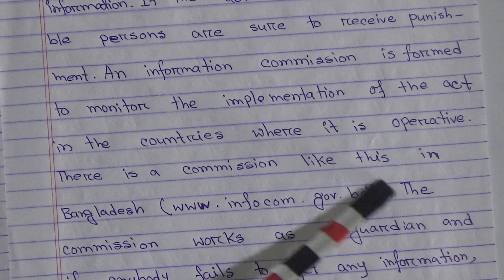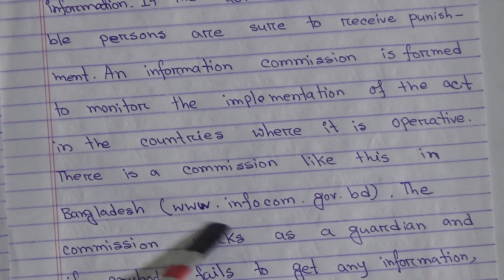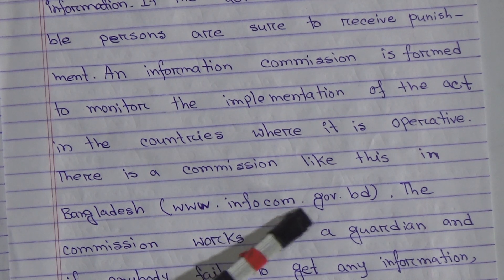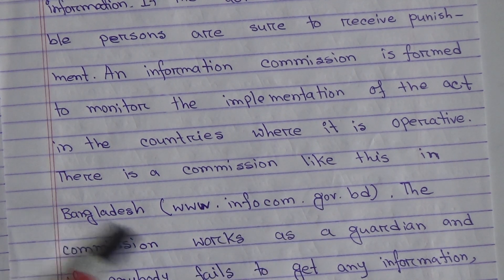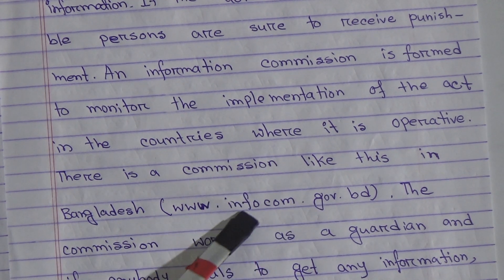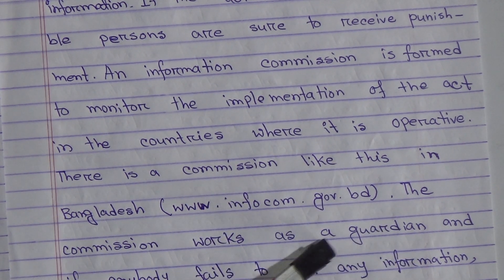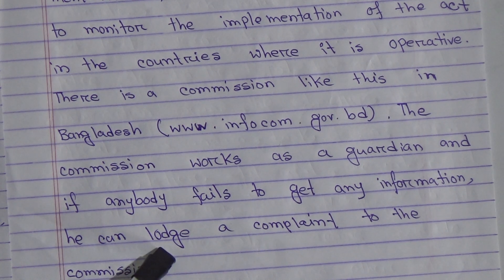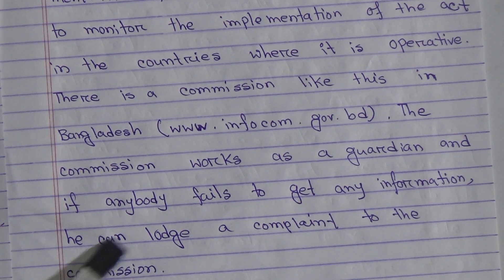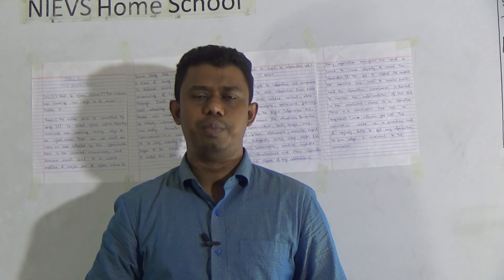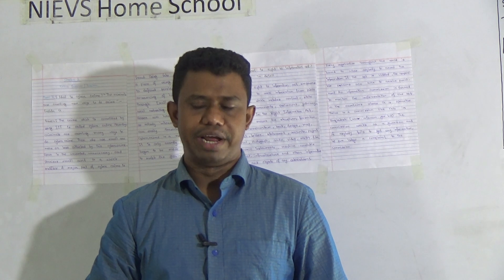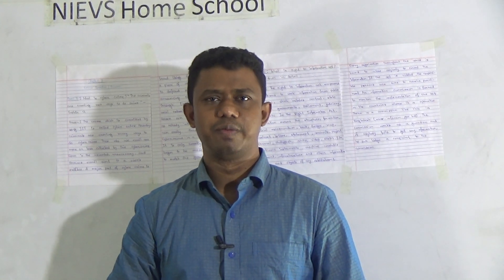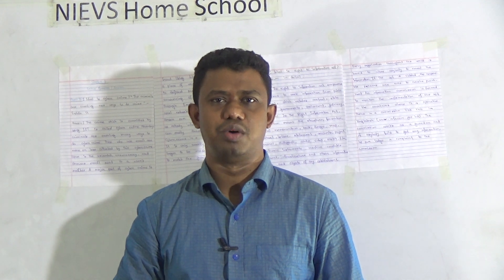If the act is violated, the responsible persons are sure to receive punishment, and an information commission is formed to monitor the implementation of the act. In the countries where it is operative, there is a commission like this in Bangladesh — www.infocom.gov.bd. The commission works as a guardian, and if anybody fails to get any information, he can lodge a complaint to the commission. This is all about these two question answers. I hope you all understood what is written here. Practice it by staying at home more and more. This is the end of the class. Assalamualaikum warahmatullahi wabarakatuh.